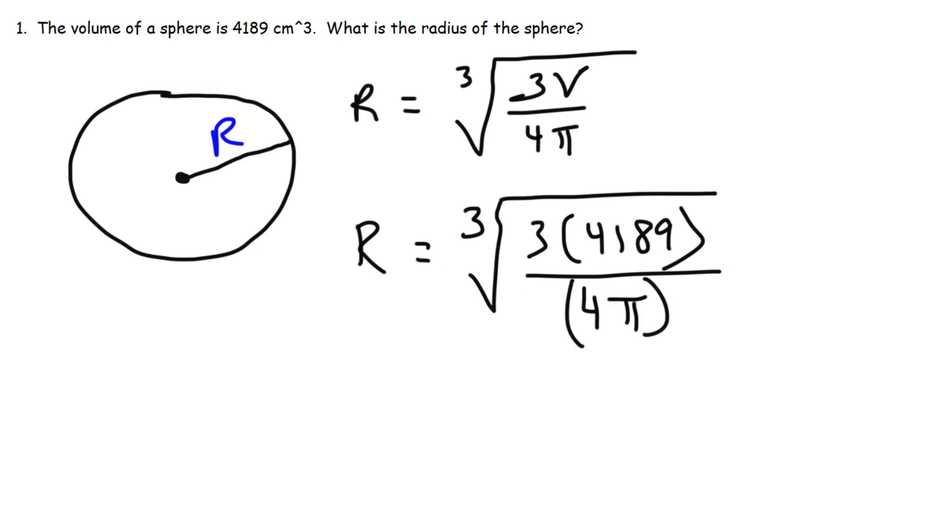By the way, make sure to put this in parentheses, otherwise you could get a different answer. So the radius of the sphere is approximately 10 centimeters. And you could determine the unit based on what we see here. So that's how you can calculate the radius of the sphere, given the volume.